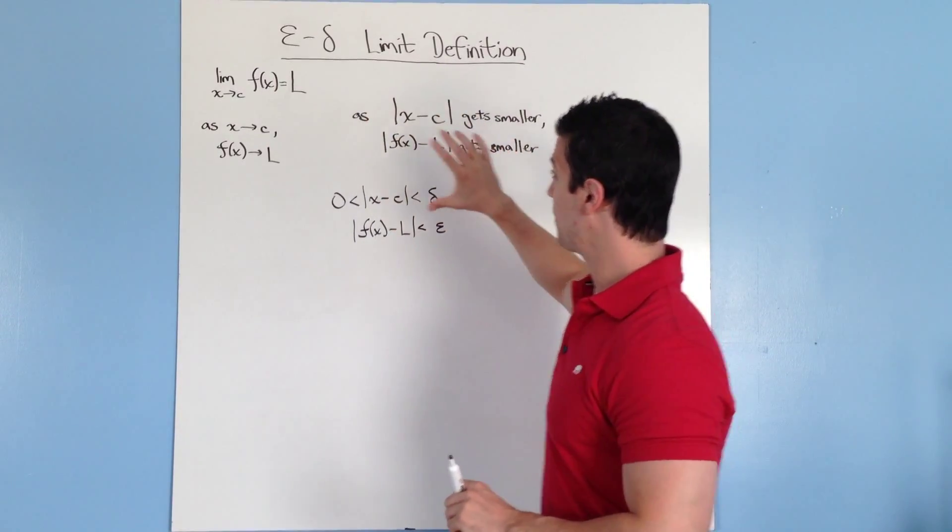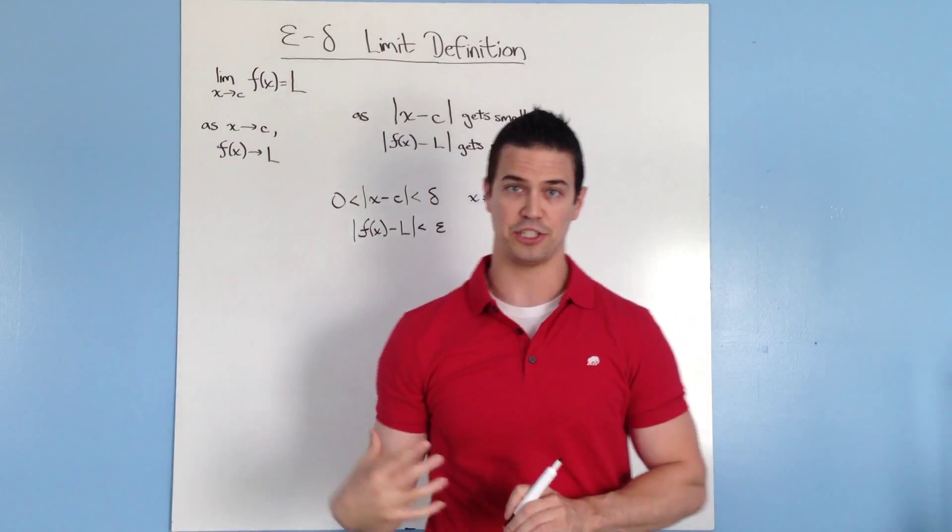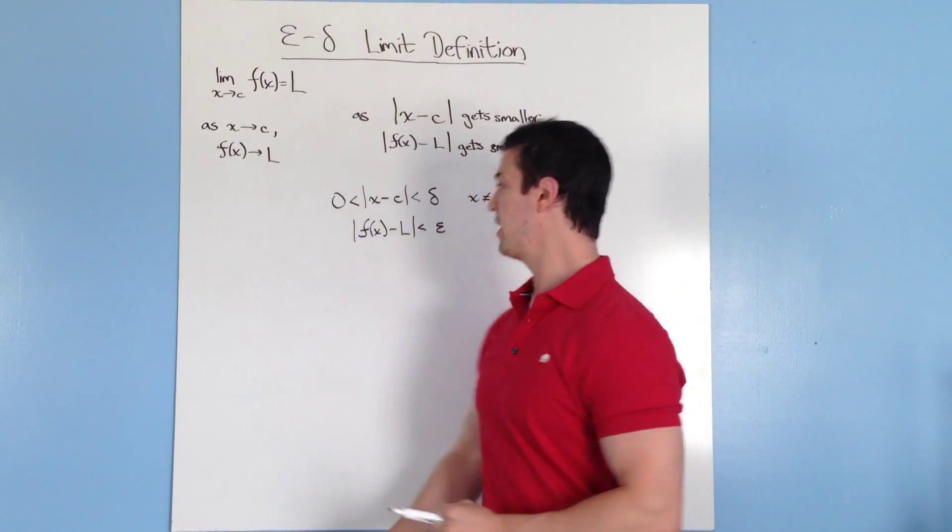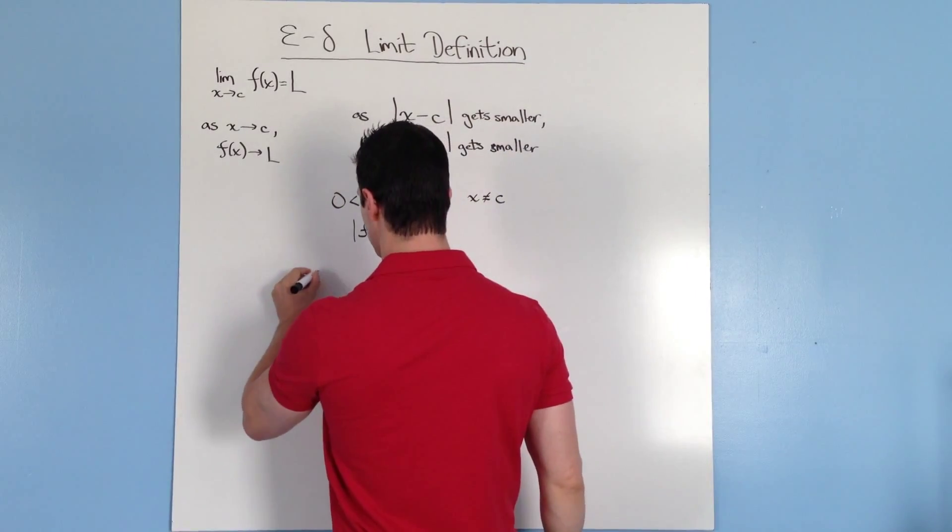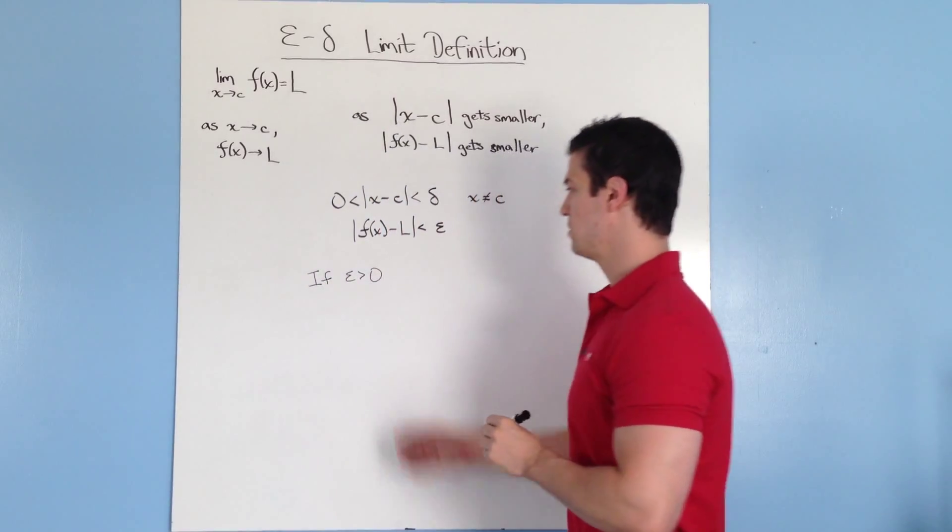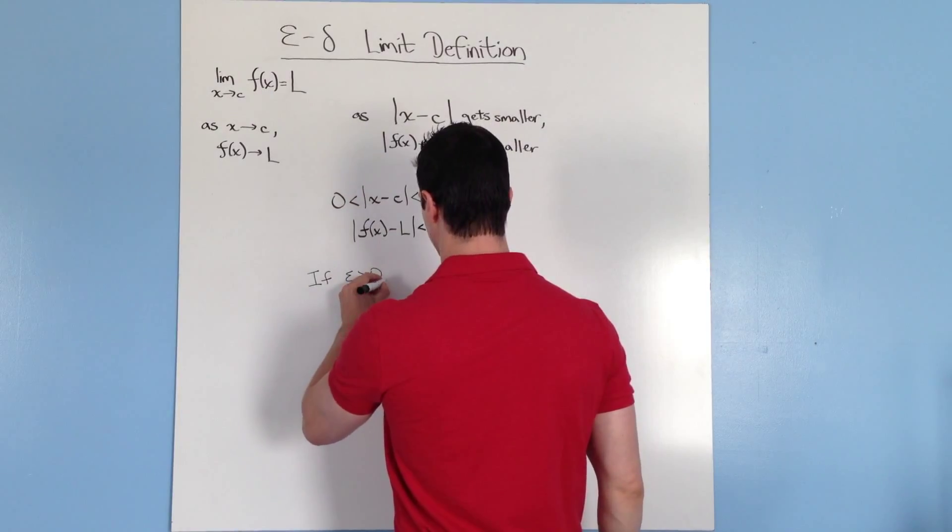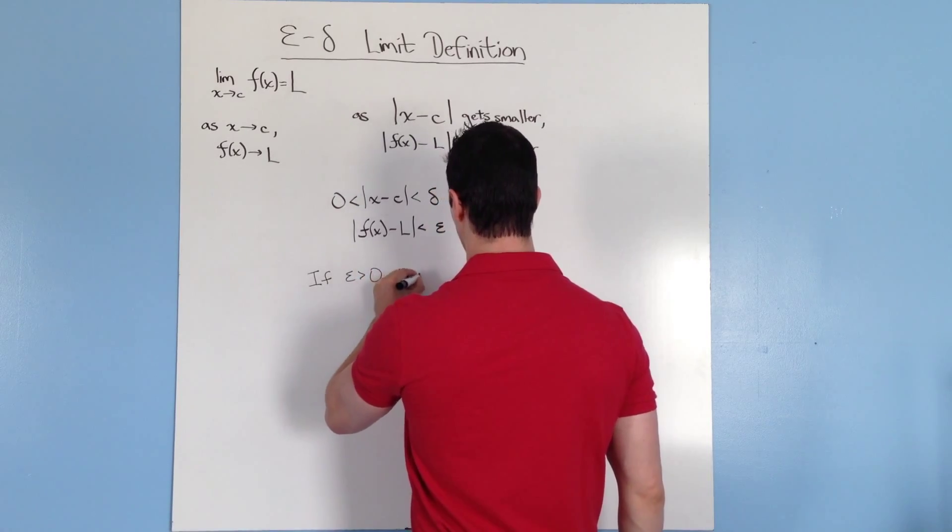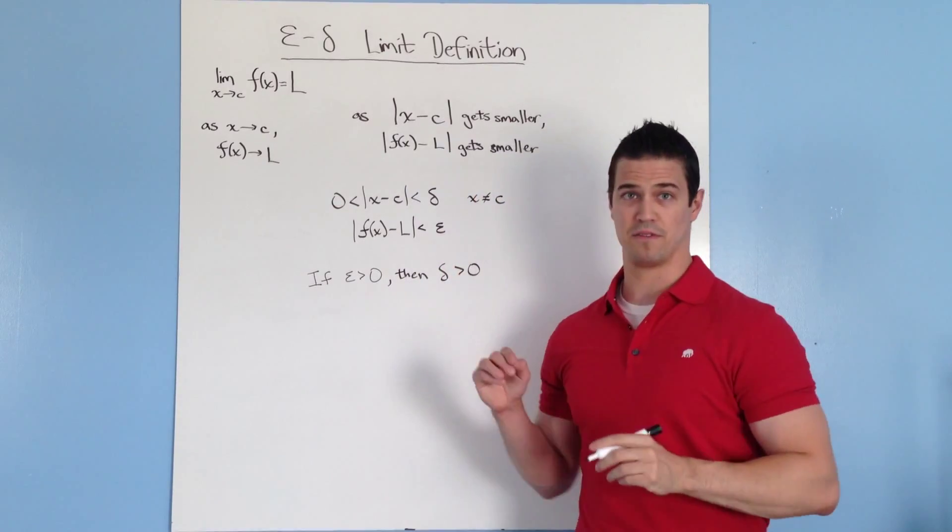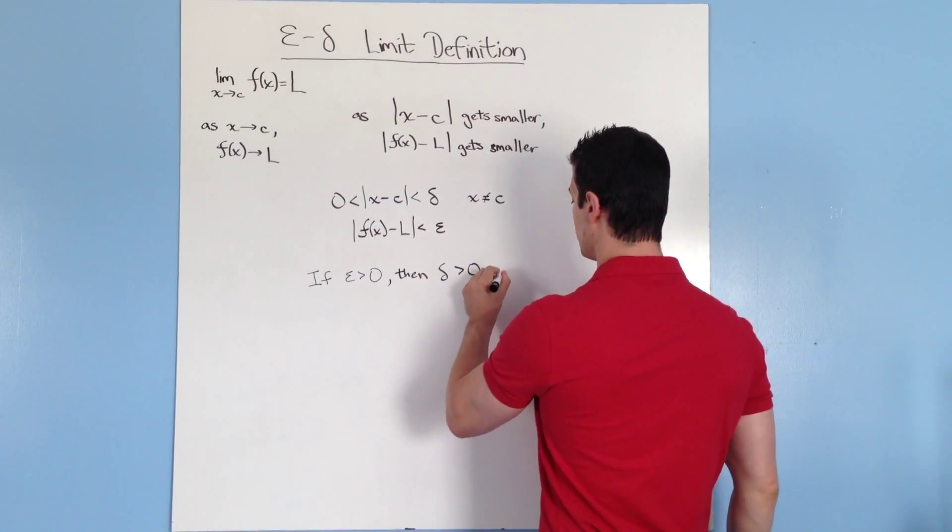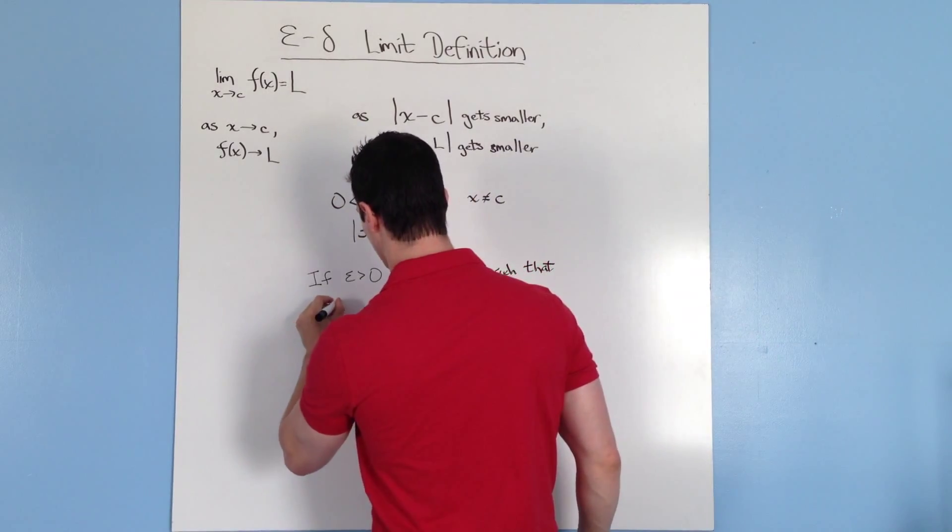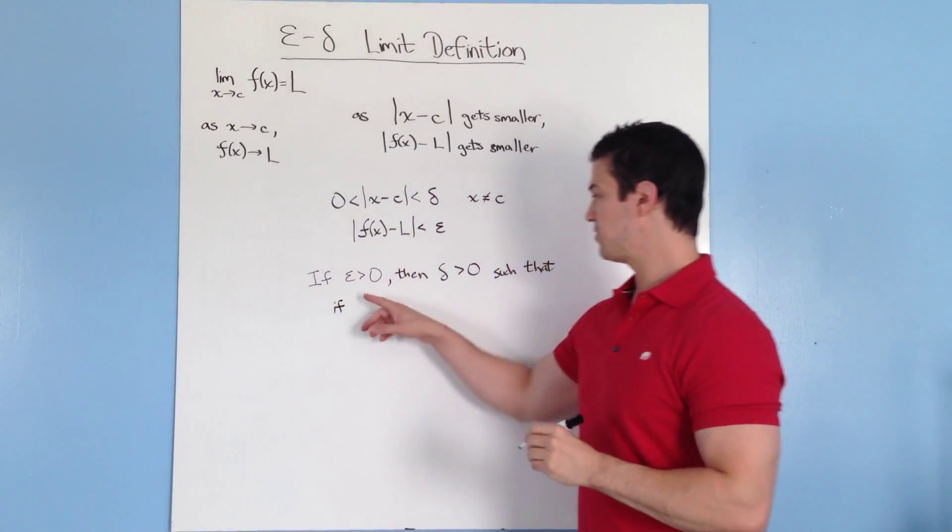Next, based on all of this, we can come up with a definition, a definition that can be used as a proof for what the limit is. Basically what we're saying is if epsilon is greater than zero, then delta has to exist and be greater than zero as well.